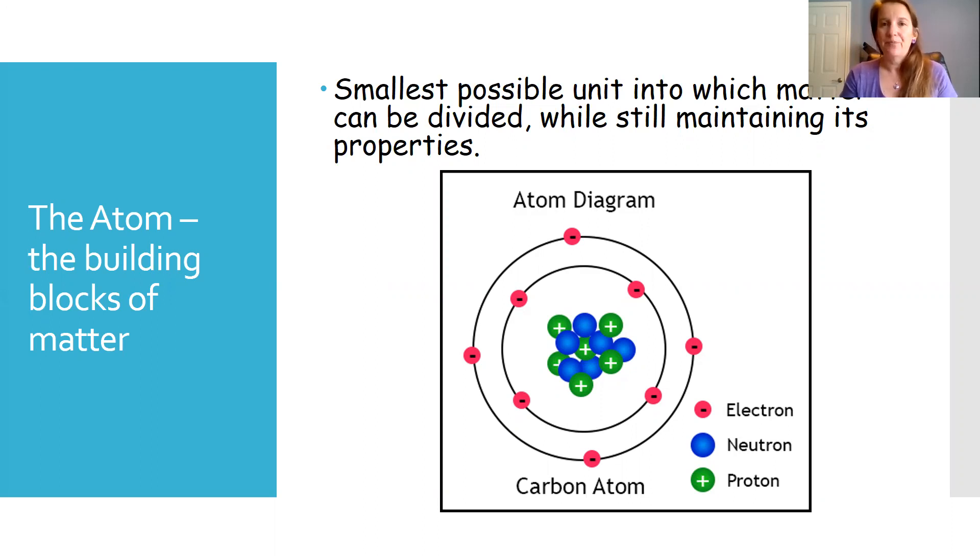We talked about in the last video about the protons and the neutrons where they're located in the nucleus. We talked about the electrons being those negatively charged particles that are found outside of the nucleus in the electron cloud.